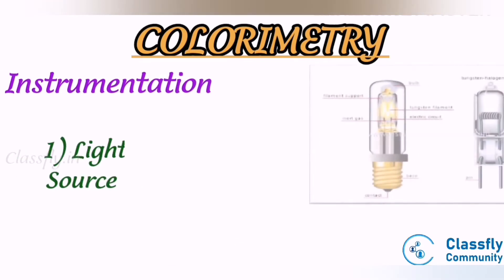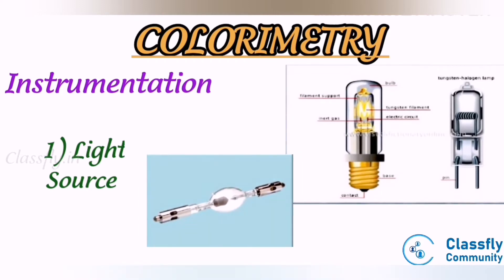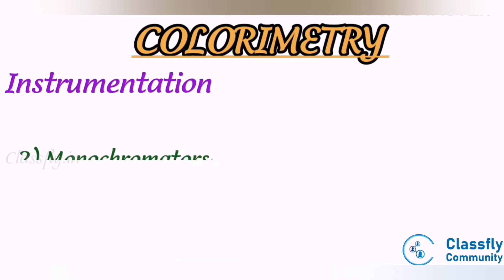Instrumentation. First, the light source: it is usually a tungsten lamp for wavelengths in the visible range, 320 to 700 nanometers, and a deuterium or hydrogen lamp for ultraviolet light, that is below 350 nanometers.